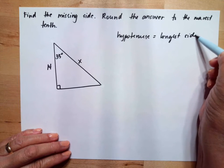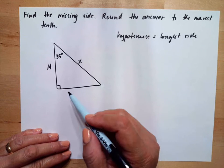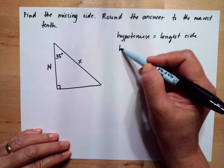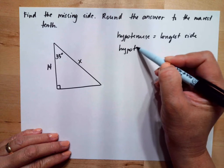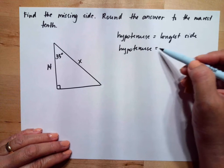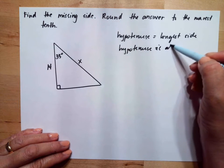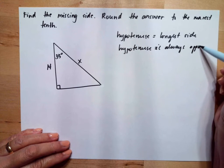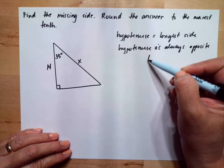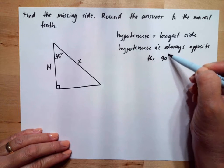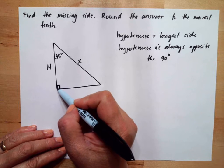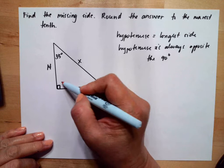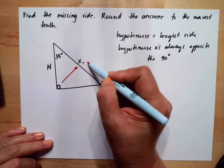But in this case, we cannot tell which is the longest side because two sides are unknown. But the hypotenuse also is always opposite the 90 degree angle. And this is the symbol for the 90 degree angle, and opposite it is the hypotenuse.